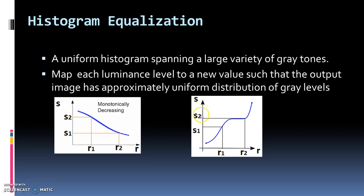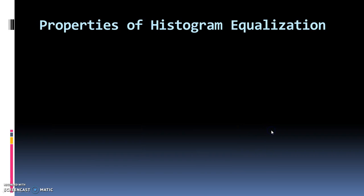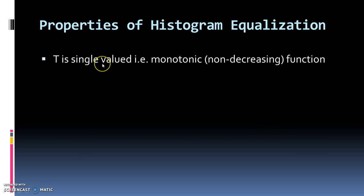The second property is that every value of r should correspond to one and only one value of s — it must be a function, so it has to be one-to-one. One value of s can correspond to more than one r value, but every r must have one and only one value of s. To summarize the properties of histogram equalization: T should be a single-valued function and it should be non-decreasing.